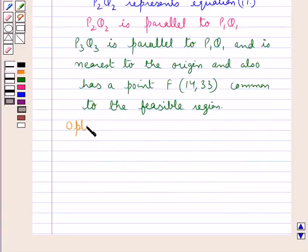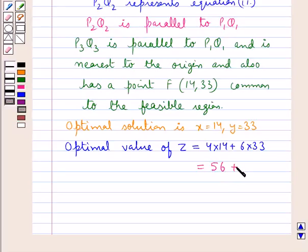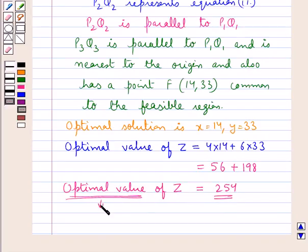Thus the optimal solution is given by x equal to 14 and y equal to 33. And the optimal value of z is equal to 4 into 14 plus 6 into 33. That is we substitute x as 14 and y as 33 in the objective function z. This is equal to 56 plus 198 which comes out to be equal to 254. That is the optimal value of the objective function z is 254 which is the minimum value in this case.